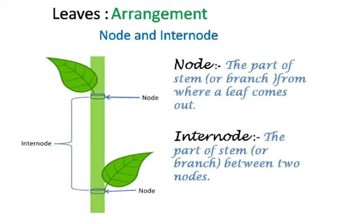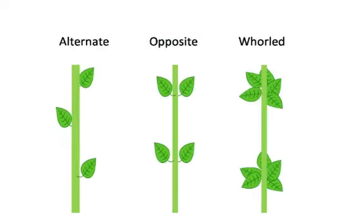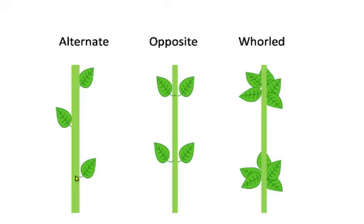Now let us see the different arrangements. There are three types of arrangement: alternate, opposite, and whorled. In the alternate type of arrangement, from one node only one leaf comes out — see here also and here also, from one node only one leaf comes out.